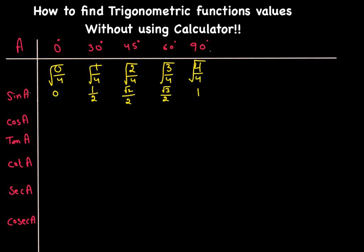These are the values for sine. So: sin(0°) = 0, sin(30°) = 1/2, sin(45°) = √2/2, which can also be written as 1/√2, sin(60°) = √3/2, and sin(90°) = 1.